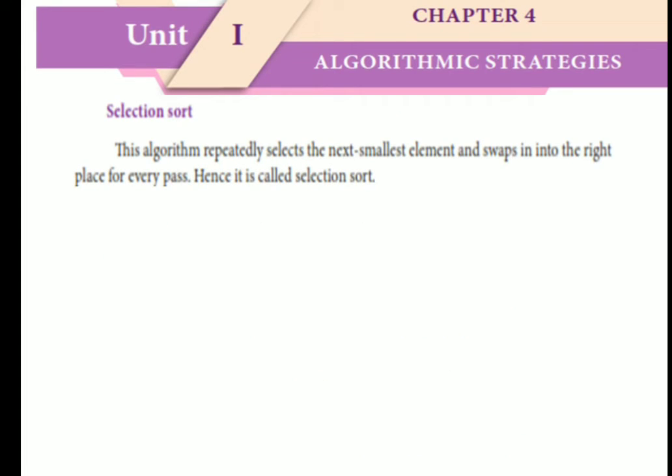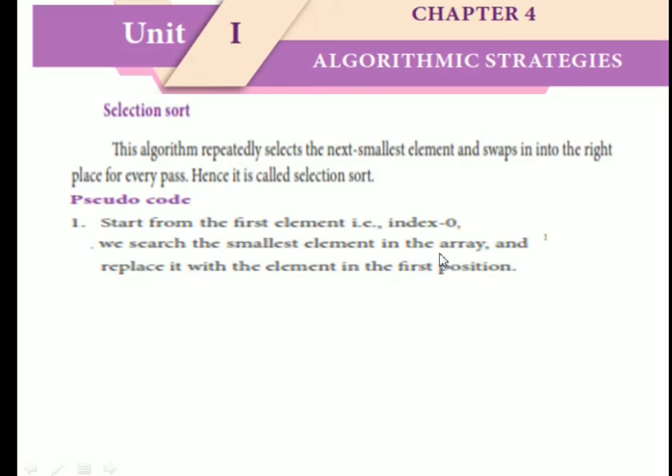Selection sort: This algorithm repeatedly selects the next smallest element and swaps it into the right place for every pass. Pseudo code: Start from the first element, that is, index equals zero.